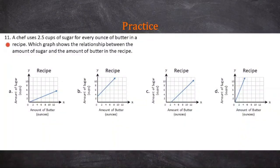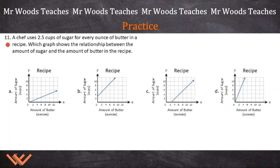Number 11, a chef uses 2.5 cups of sugar for every ounce of butter in a recipe. Which graph shows the relationship between the amount of sugar and the amount of butter in the recipe? Let's take a look here. These graphs show the amount of sugar in the y direction and the amount of butter in the x direction. Notice we have ounces here and cups here for the sugar.